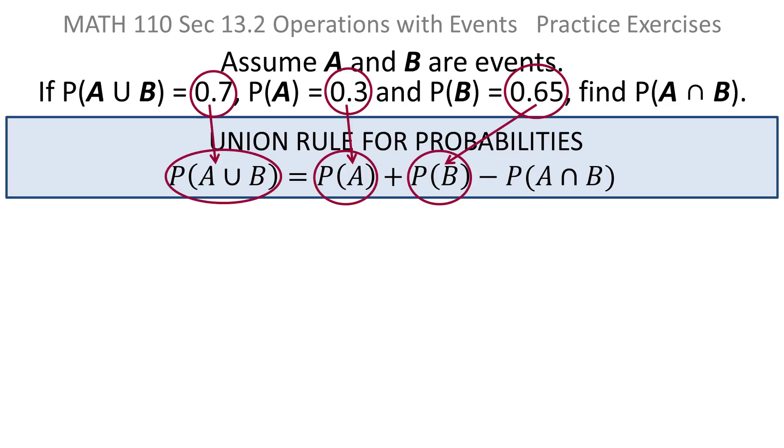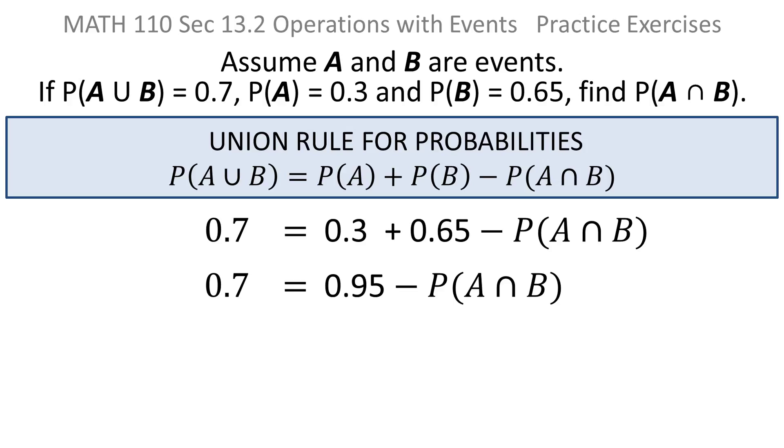Given that, you simply plug in the values you know and solve for the one that you don't. So if you do that, if you add 0.3 and 0.65, you get 0.95.